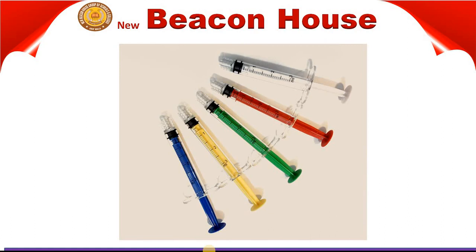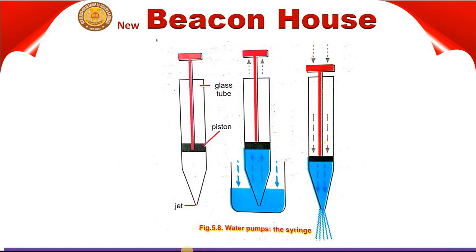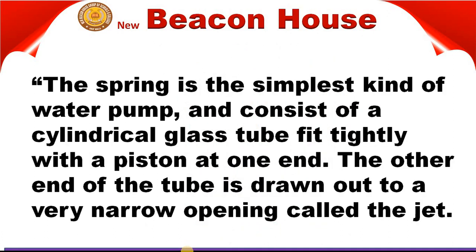If we discuss about the syringe, we will discuss its different parts as you can see on your screen. First of all, the syringe is the simplest kind of water pump and consists of a cylindrical glass tube fitted tightly with a piston at one end. The other end of the tube is drawn out to a very narrow opening called the jet.